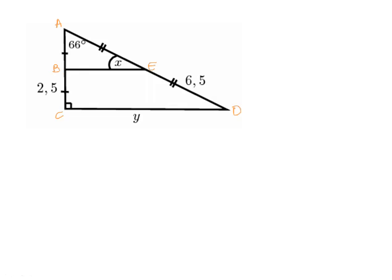Right, we need to determine the size of x and the length of y. So we can see here that the line BE is the line that joins the midpoint of AC to the midpoint of AD because we are given that those two lengths are equal and that these two lengths are equal.